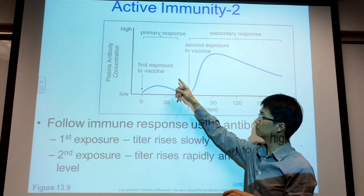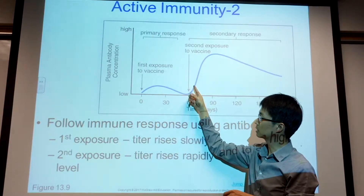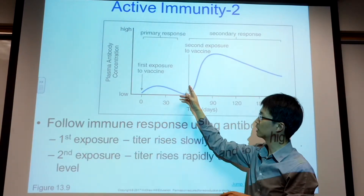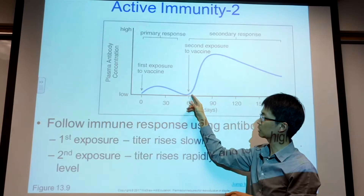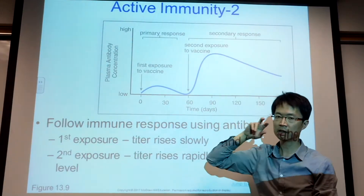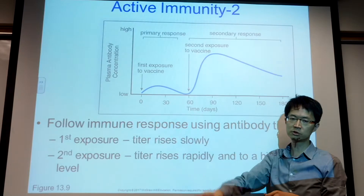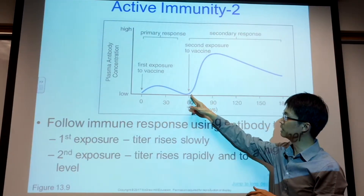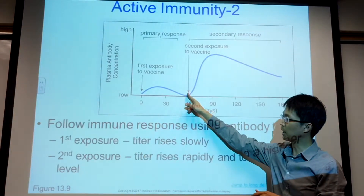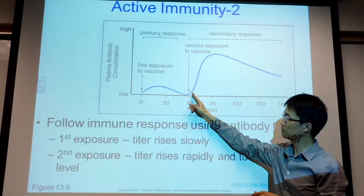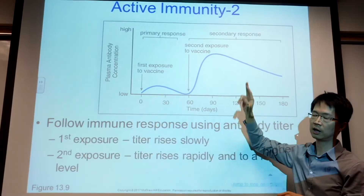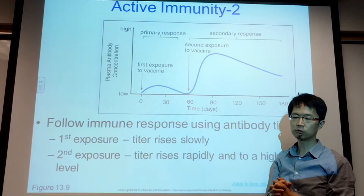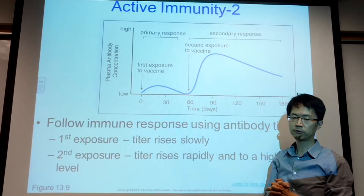After you finish the first infection, no matter how much time passes, if you get a second infection from the same strain of pathogen, the memory cells can immediately secrete a massive amount of antibody to fight the infection for you, so you don't need to go through the flu-like symptoms again.